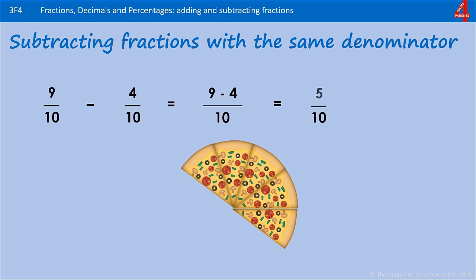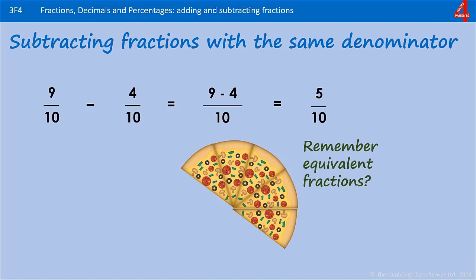We have 5 tenths of the pizza. You can probably see from the image that that is the same as half a pizza. And if you remember how to simplify, you will recognise that 5 tenths is the same as a half.